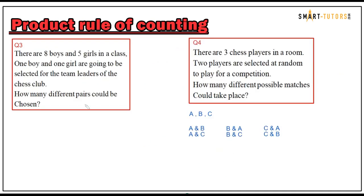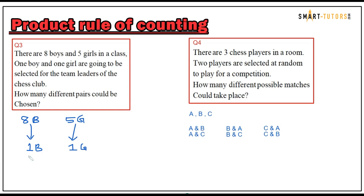Question number three: There are eight boys and five girls in a class. One boy and one girl are going to be selected as team leaders for the chess club. So out of eight boys they are choosing only one boy, and out of five girls they are choosing only one girl — they are chosen as a pair.